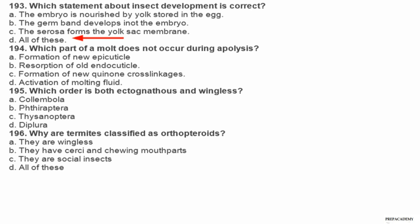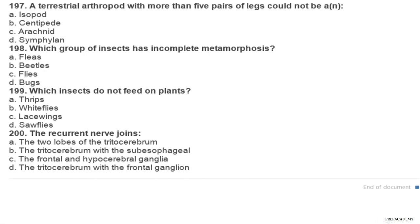Question 195. Which order is both ectognathous and wingless? A Collembola, B Thysanura, C Thysanoptera, D Diplura. Question 196. Why are termites classified as orthopteroids? A they are wingless, B they have cerci and chewing mouth parts, C they are social insects, D all of these. Question 197. A terrestrial arthropod with more than five pairs of legs could not be: A isopod, B centipede, C arachnid, D symphylan.